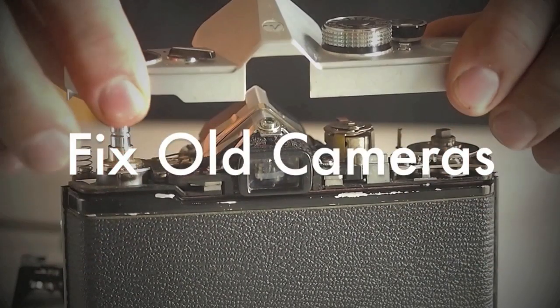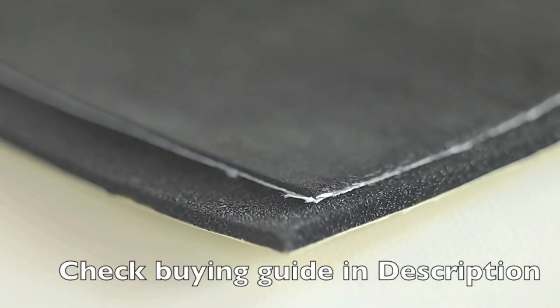This Fixold Camera video will demonstrate how to cut replacement light seal foam for your classic or vintage camera.